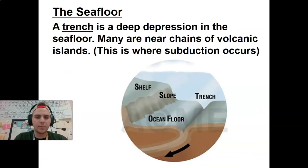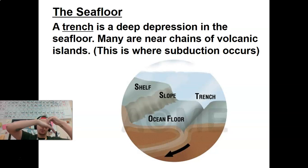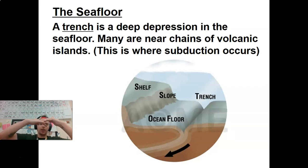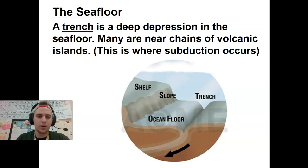A trench is a deep depression in the seafloor. Many are near chains of volcanic islands, usually where subduction is happening. As two plates come together, if one is denser than the other, it will sink underneath it, and as it does, it will crunch in some of the plate above it — and that little area right there is your trench. That's how trenches are made.